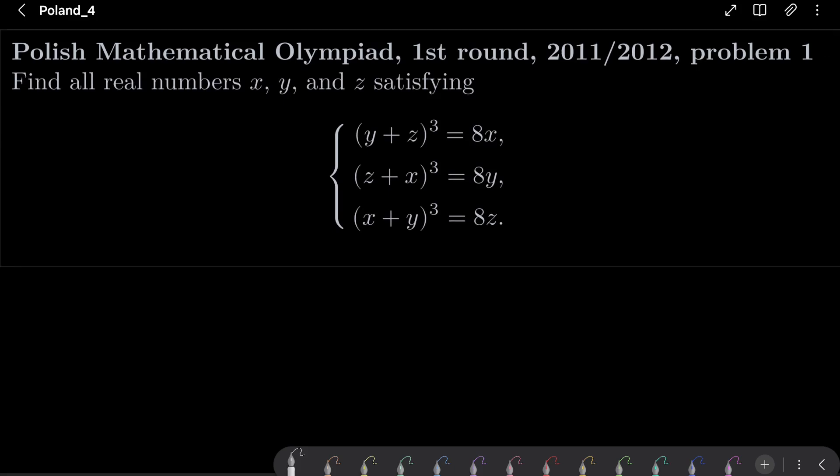We wish to find all real numbers x, y, and z satisfying the following system of equations: (y+z)³ = 8x, (z+x)³ = 8y, (x+y)³ = 8z.